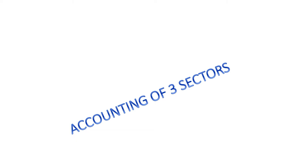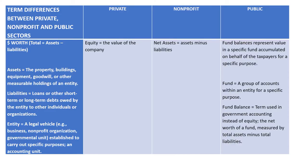We've talked about accounting in the three sectors and compared them. When discussing the art of accountancy, we looked at the worth of an organization — assets minus liabilities. In the private sector they call it equity, in the nonprofit sector it's called net assets, and in the public sector it's called a fund balance, because they use fund accounting, as does not-for-profit usually.